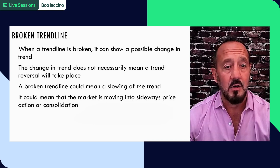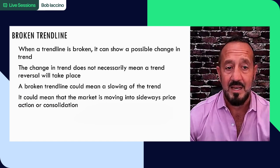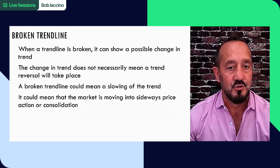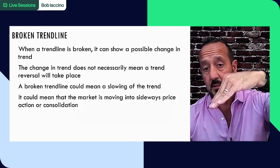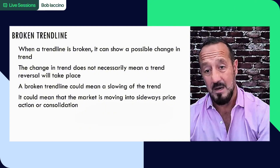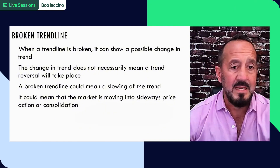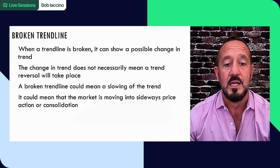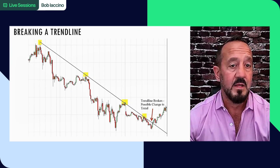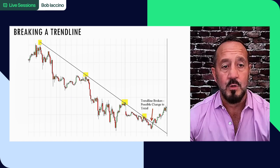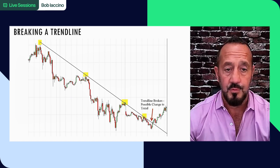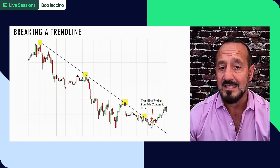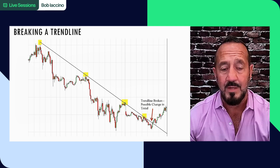The change in trend does not necessarily mean a trend reversal will take place. A broken trend line could mean a slowing of the trend - a steep trend becoming less steep, but still downward sloping. It could mean that the market is moving into a sideways price action or consolidation period as well. Here we see a broken trend line. You have your three points that a traditional trend line needs. We get a trend line broken, possible change in trend, but we don't know that yet.